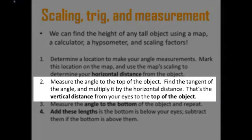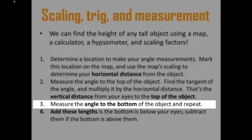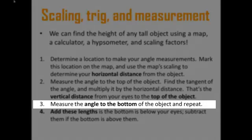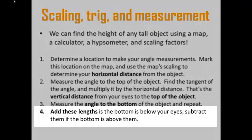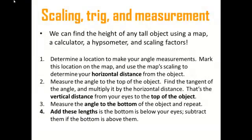Next, measure the angle to the top of the object using your hypsometer. Find the tangent of that angle using a calculator, and multiply it by the horizontal distance. That's the vertical distance from your eyes to the top of the object. Next, measure the angle to the bottom of the object, and repeat. You'll find the vertical distance to the bottom of the object. Then add these lengths together, if the bottom is below your eyes, and subtract them if the bottom is above it. And you'll find the height of the object.